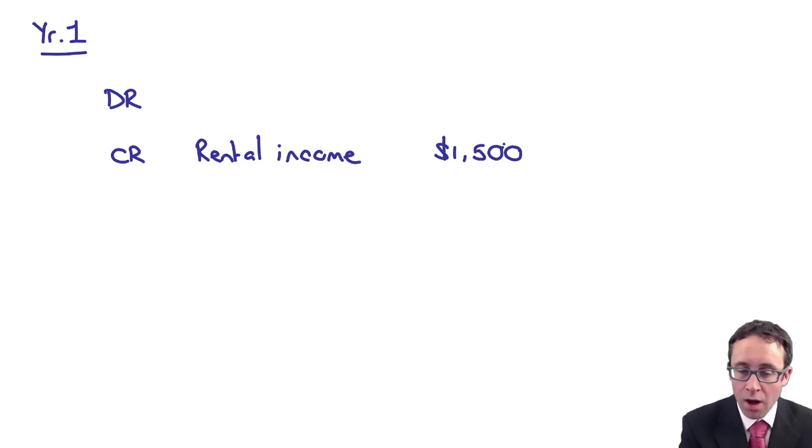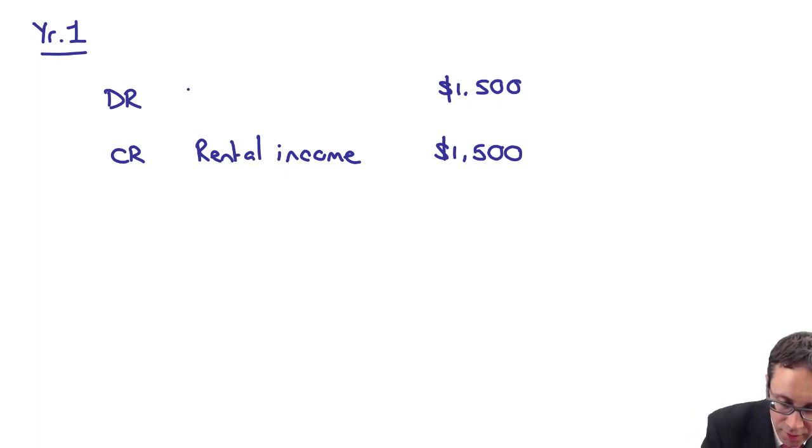And that rental income is $1,500. So what are we going to go through there and debit?